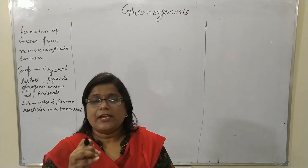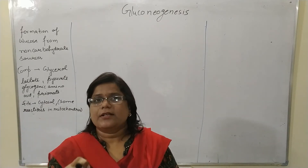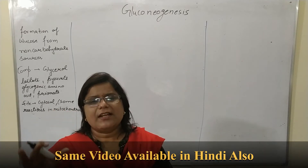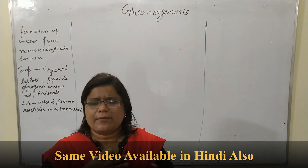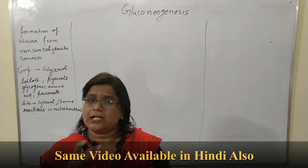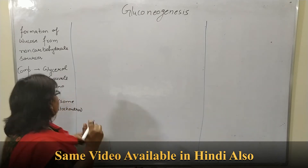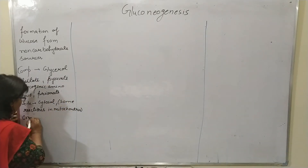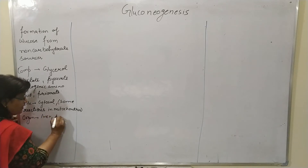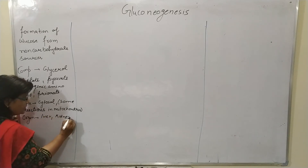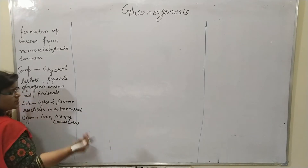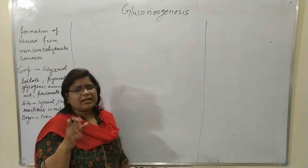What are the organs mainly involved in gluconeogenesis? The main organ is the liver, and to some extent the kidney — specifically the renal cortex — is also involved in gluconeogenesis.